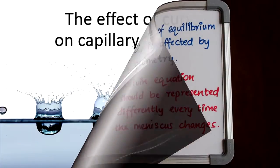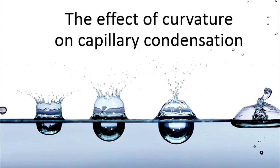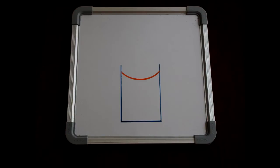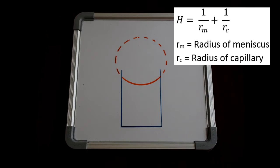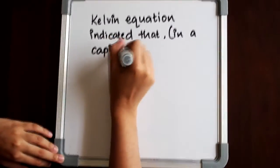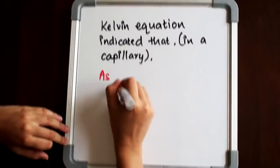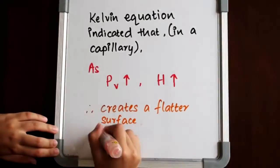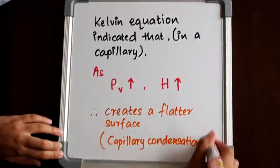Now, we'll be explaining the effects of curvature on capillary condensation. Capillary condensation is mainly affected by the radius of the meniscus, which can be obtained by extrapolating a circle from the meniscus in a capillary and measuring the length of the radius. The Kelvin equation indicates that inside a capillary, as equilibrium vapor pressure increases, the mean curvature of meniscus increases as well. This creates a much flatter surface, hence more capillary condensation can occur.